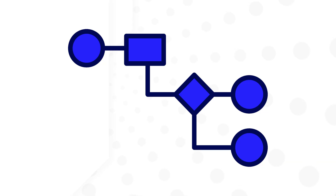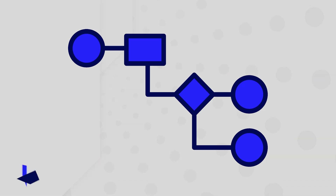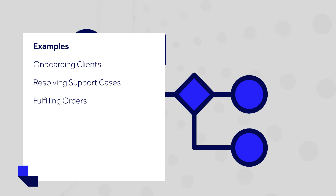Every business relies on smooth-running, efficient processes to successfully achieve its goals. These processes vary among industries. Examples include onboarding new clients, resolving support cases, and fulfilling orders.